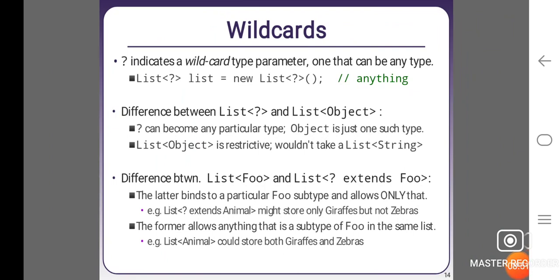Wildcards. <?> indicates a wildcard type parameter, one that can be any type. List<?> list = new ArrayList<?>(). Difference between List<?> and List<Object>: <?> can become any particular type, Object is just one such type. List<Object> is restrictive, wouldn't take List<String>.